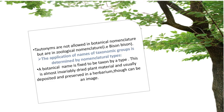A tautonym is a scientific name of a species in which both parts of the name have the same spelling — the specific name repeats the generic name unaltered. Tautonyms are considered illegal in botanical nomenclature, but this method is accepted in zoological nomenclature. A botanical name is fixed to a type, which is almost invariably dried plant material usually deposited and preserved in a herbarium, though it can be an image.